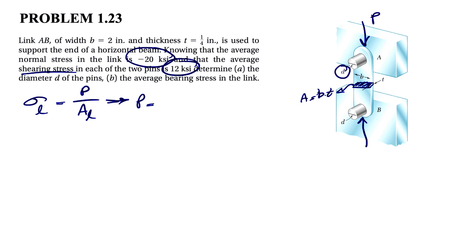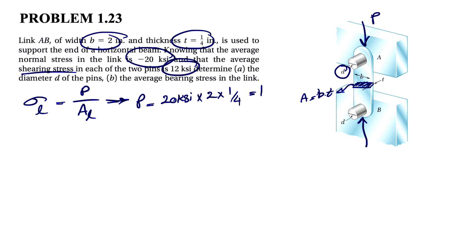We are trying to figure out the force P. That would be 20 KSI times the area, which is B times T. B is 2 and T is one quarter, so it's 20 times 2 times one quarter. That gives us 20 divided by 2, which equals 10. Since our units are KSI and inches squared, the force is 10 kips.